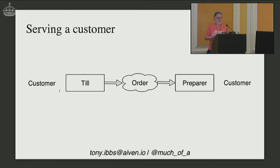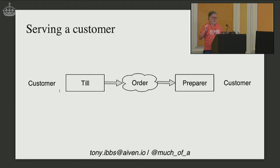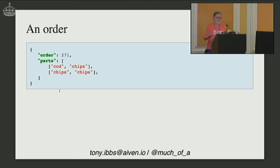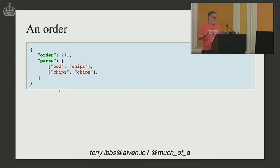To serve a customer: they come in, go to the till, make the order, pay. The till sends an event to the order topic, and then the food preparer consumes the order from the order topic, makes up the fish and chips, and passes them to the customer. An order might be a piece of JSON with an order number for bookkeeping, and then the parts of the order — for example, cod and chips, plus a large portion of chips modelled as two portions.